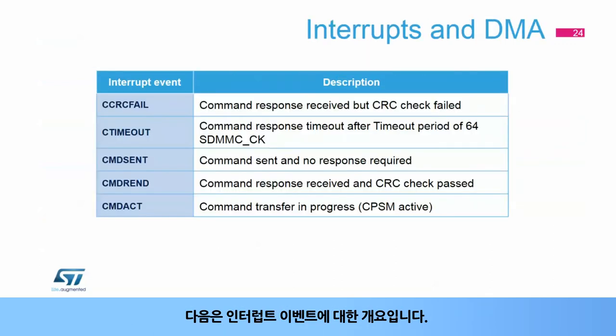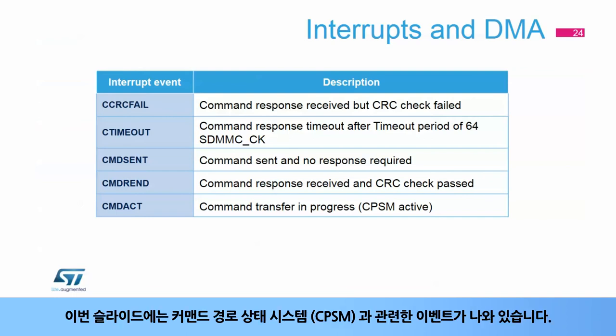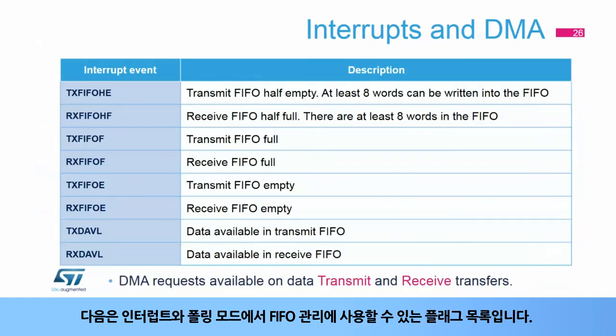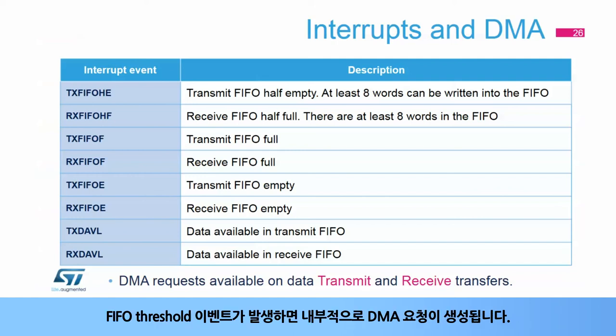SDIO interrupts are sent from the card to the SDMMC host when the card detects an external event. The SDMMC host detects interrupts sent on the SDMMC D1 pin once the SDIOEN configuration bit in the data control register is enabled. While the DPSM remains in idle state, all low levels on the SDMMC D1 pin are detected as interrupts from the card to the host. There is an overview of interrupt events covering flags for the command path state machine, flags for the data path state machine related to transfer direction and status, and flags for FIFO management in interrupt and polling modes. DMA requests are internally generated when triggered by FIFO threshold events.